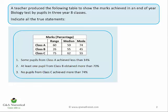Statement one says: some pupils from class A achieve less than 14%. My rule to remember is: if you're dealing with a less than statement, have a look at the median and the mode for class A and just pick the higher of the two. The higher of the two is 74, which was the mode — but I don't care if it's the mode or the median, I just want the higher of the two.